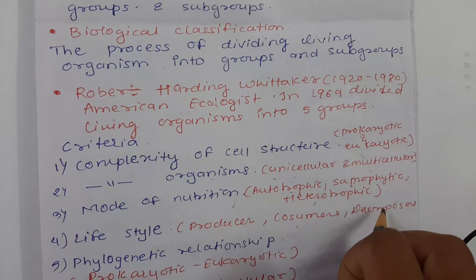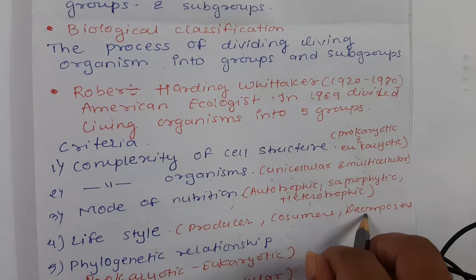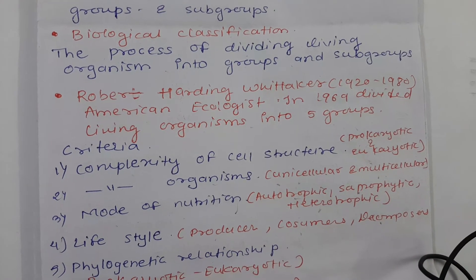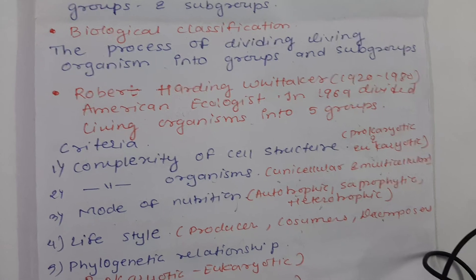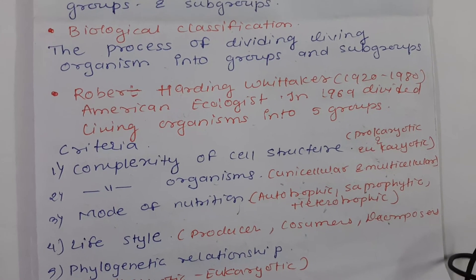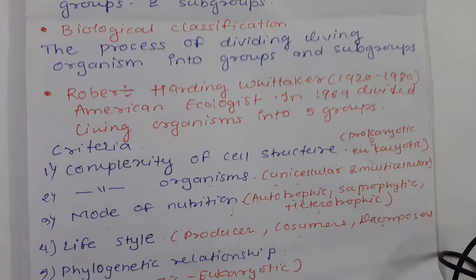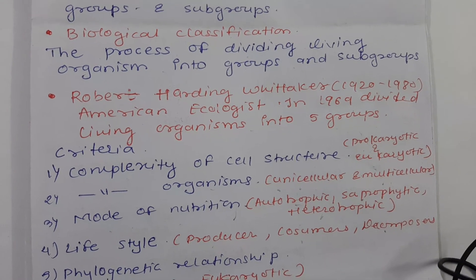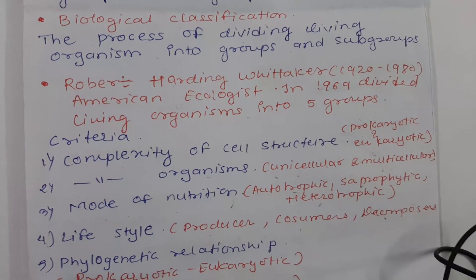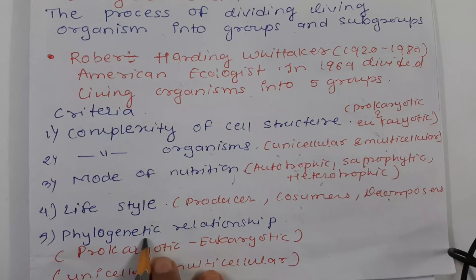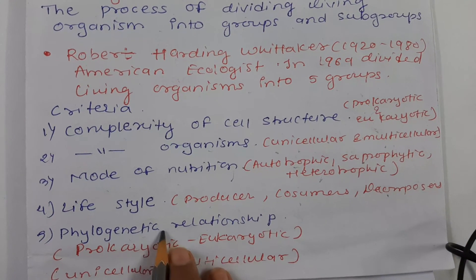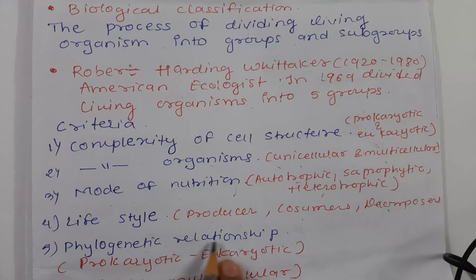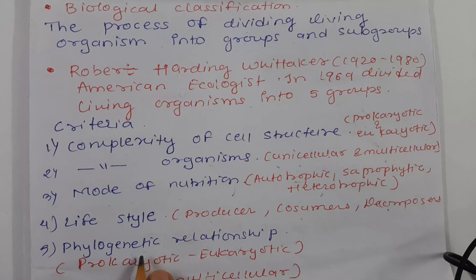The fourth criterion was lifestyle — whether the organisms were producers, consumers, or decomposers. Whittaker placed producers in one group, consumers in another group, and decomposers in another group. According to this, he divided all organisms into five groups.